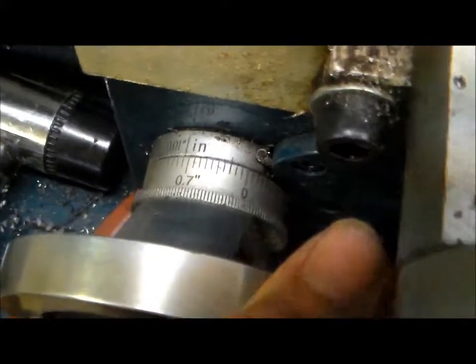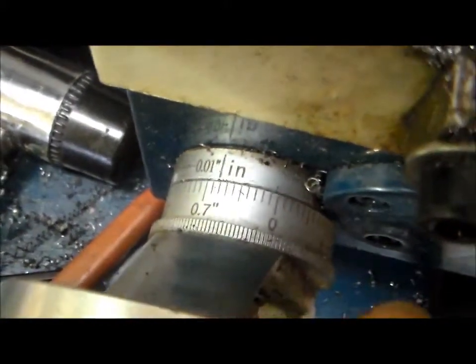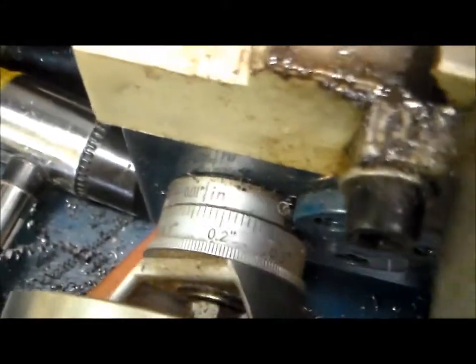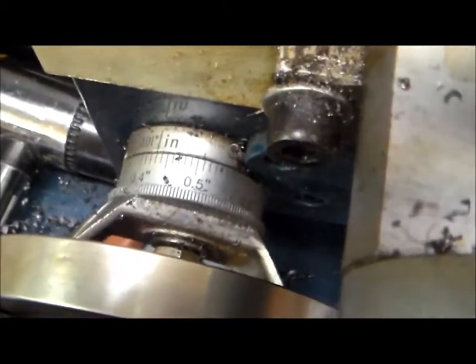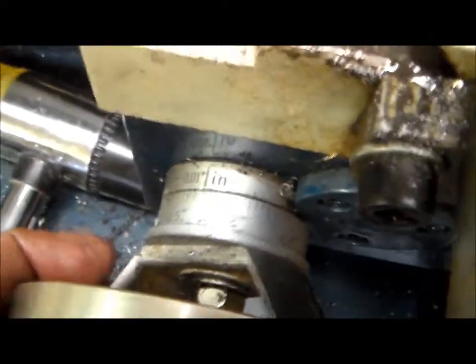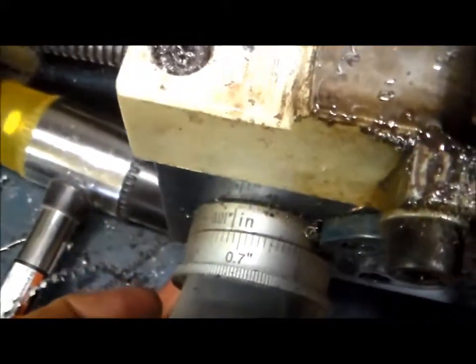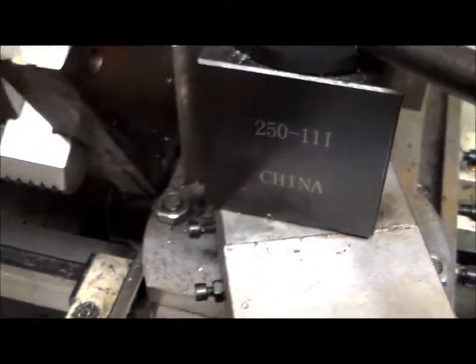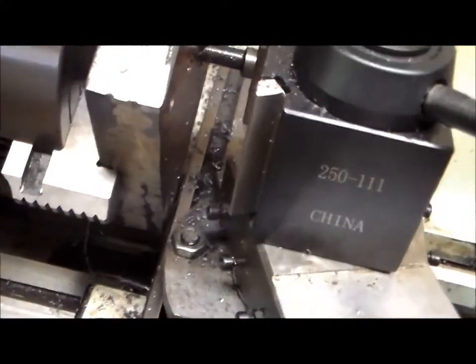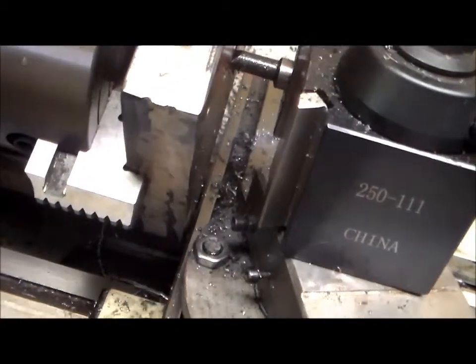Because right now the only way I have really to see how far to go is this dial on my axis here and I have set zero to where I want to stop. So now I have to turn and watch for the zero to come around and that is my stopping point right there. It seems to be working just fine.